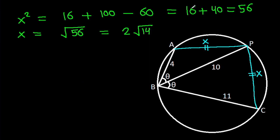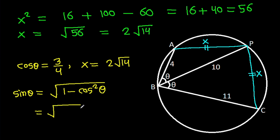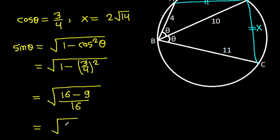We now have cos theta equals 3/4 and x equals 2 root 14. We know that sin theta equals root(1 minus cos² theta), which is root(1 minus (3/4)²), equals root((16 minus 9)/16), equals root(7/16), so sin theta equals root 7 over 4.